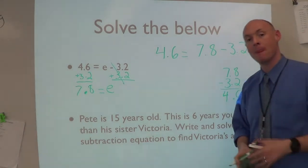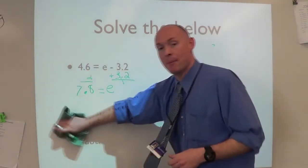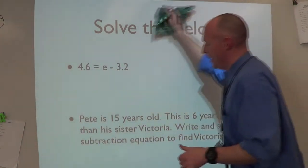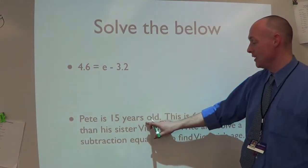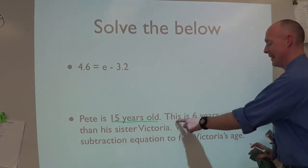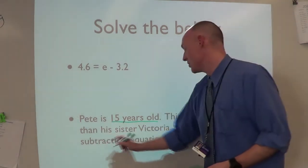Now we can also use these with word problems. I have a sample right here. Pete is 15 years old - key math term - this is six years younger than his sister Victoria.